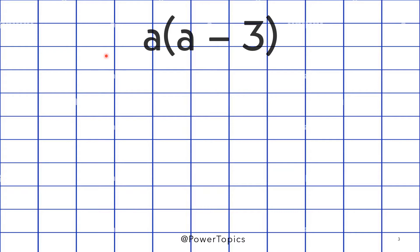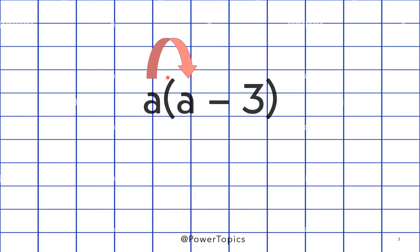Okay so, same thing. A multiplied by A and A multiplied by 3. So we just multiply what is outside the bracket by what is inside the bracket. So we have A multiplied by A minus A multiplied by 3. So we can't write it like that. We have to simplify it.